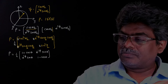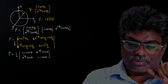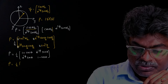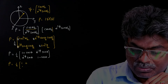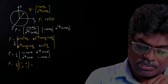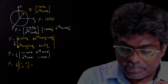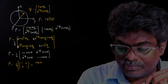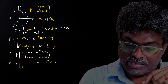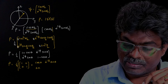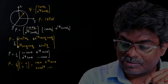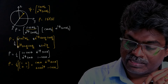Let us split this matrix. Rho equals 1/2 times: first splitting out the identity matrix 1 0 / 0 1, and the remaining matrix has cosθ, e raised to minus iφ sinθ in the top row, and e raised to iφ sinθ, minus cosθ in the bottom row.